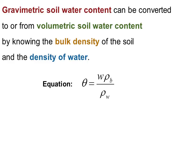And the way these all relate to each other is through this equation. The volumetric water content theta is equal to gravimetric water content W times the bulk density rho B, divided by the density of water, rho W.